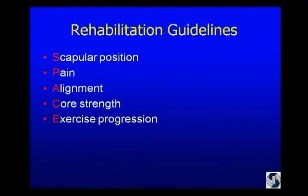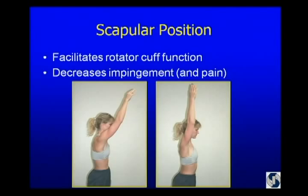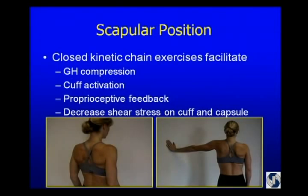The guidelines I'm using now look at scapular position, pain, alignment, core strength, and exercise progression — range of motion goes along with the flow throughout all of this. For scapular position: it facilitates rotator cuff function and decreases impingement and pain. Scapular positioning can actually improve the function of the supraspinatus by 23% in strength testing. To establish scapular position, we tend to use closed kinetic chain exercises first, because that compresses the glenohumeral joint, improves cuff activation and proprioceptive feedback, and decreases shear stress on the cuff and capsule.